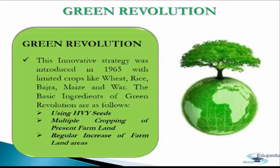At the time of independence, about 75% of the country's population was dependent on agriculture. The state of Indian agriculture before adopting the New Agriculture Strategy (NAS) included uneven and very low growth, imbalanced regional growth, and imbalanced inter-sectional inequality of income.